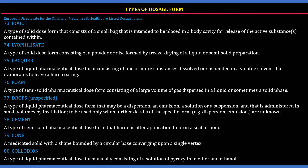These are the EDQM-listed dosage forms. 73. Pouch: A type of solid dosage form containing a small bag intended to be placed into a body cavity for release of active substances. 74. Lyophilizate: A type of solid pharmaceutical dose form that contains a powder or disc formed by freeze-drying of a liquid or semi-solid preparation.